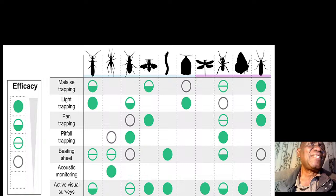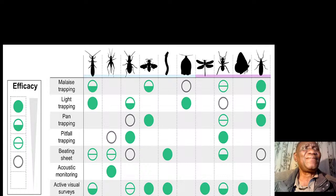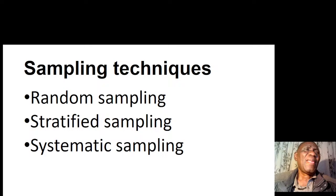Among the methods used in monitoring insect pests we have: malaise trapping, light trapping, funnel trapping, Mustafa trapping, pitfall trapping, beating sheet, acoustic monitoring, and active visual surveys. We just use what is appropriate for our local conditions.